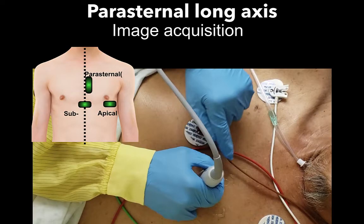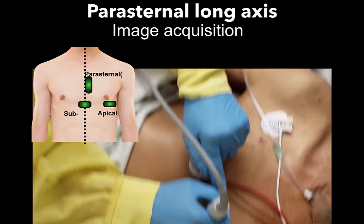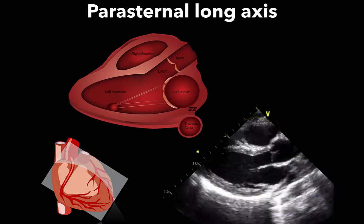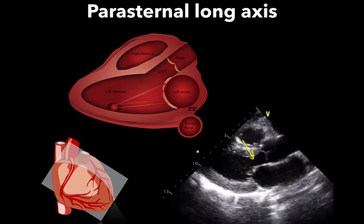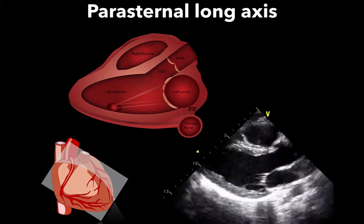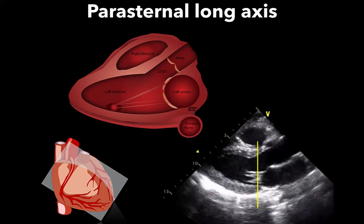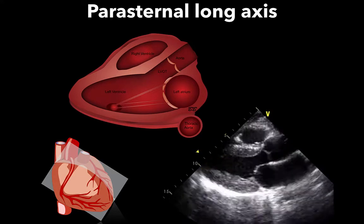Let's go over these five acoustic views or windows in real time. The first image is a parasternal long axis, obtained at the third or fourth intercostal space with the probe marker facing the right shoulder. You will obtain the parasternal long axis through the left ventricle. Here we can see a high-quality parasternal long axis showing the pericardium, descending thoracic aorta, left atrium, mitral valve, left ventricle, outflow tract, aortic valve, aortic root, and right ventricular outflow tract. The mitral valve should roughly fall in the middle of the screen, as this is the ideal parasternal long axis angle. We do not use this view to look at the apex, as you really never reach it from this angle.